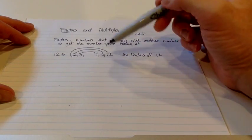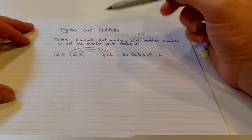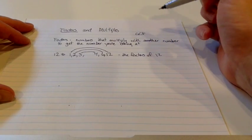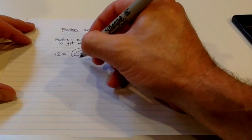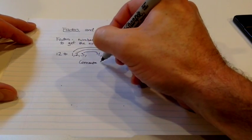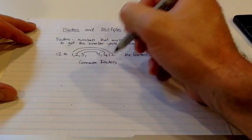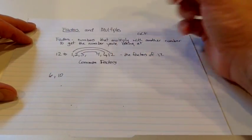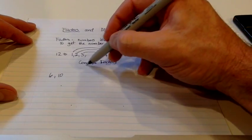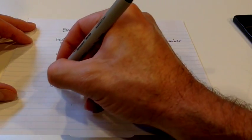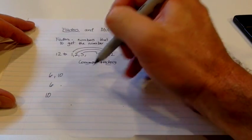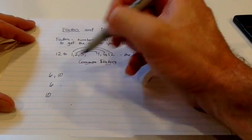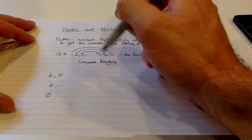All of these numbers multiply by something else to get the number we're looking at. Now, sometimes we're looking at common factors. So I may have two numbers, maybe 6 and 10. And I'm looking for what factors do they have in common. In a case like this, I would write the 6 down and I would write the 10 down. And I'd write out all of the factors that I have for both of them. And then I'd look for the ones that they have in common. So first start with factors and figure out what's in common.